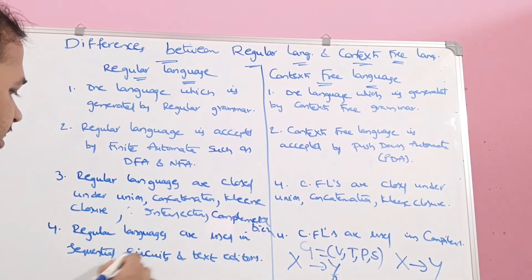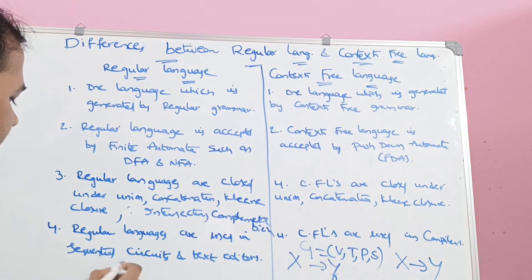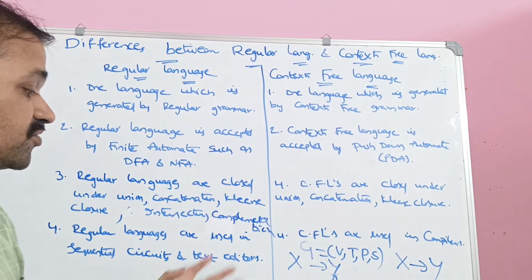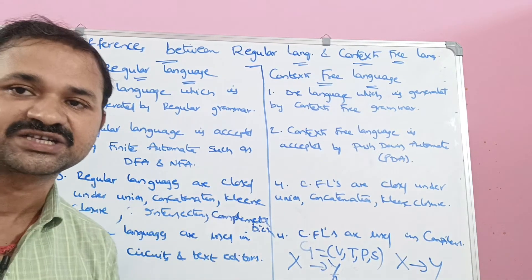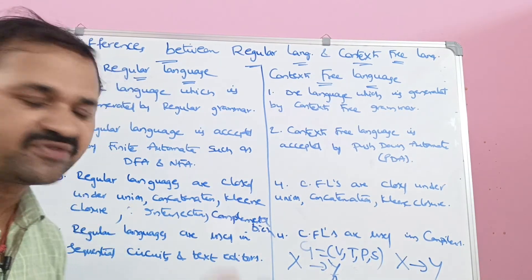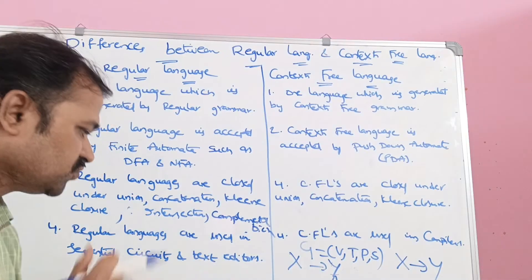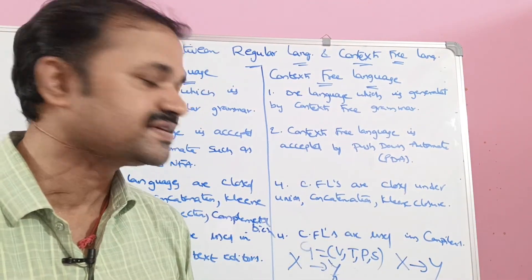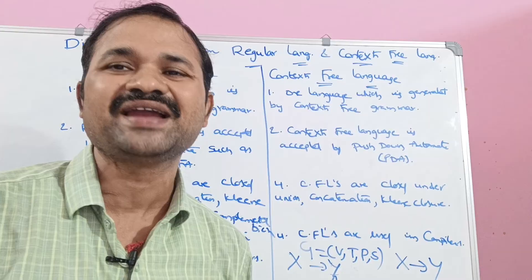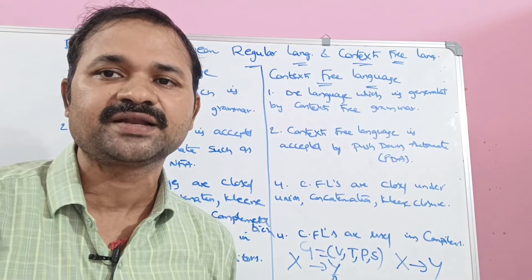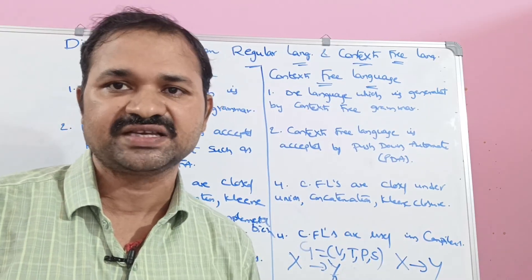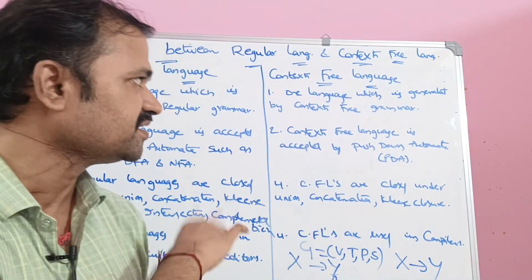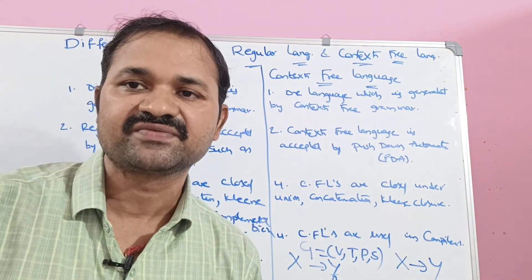The fourth difference is about applications. Regular languages are used in sequential circuits and text processing. Context-free languages are used in compilers. These are the differences between regular languages and context-free languages.